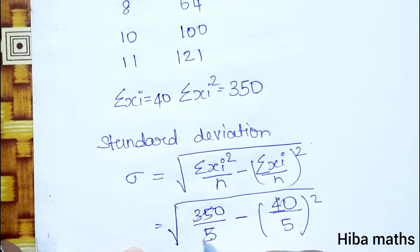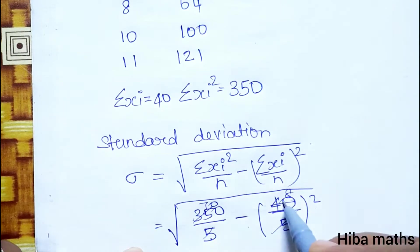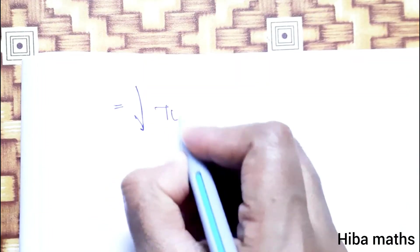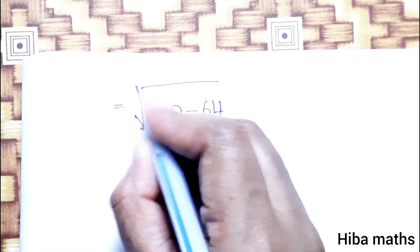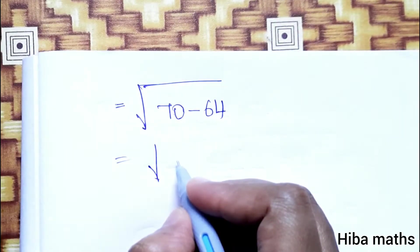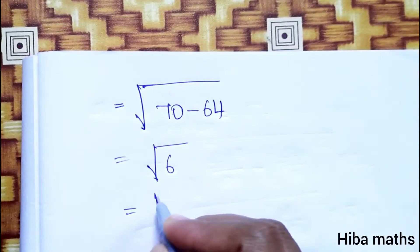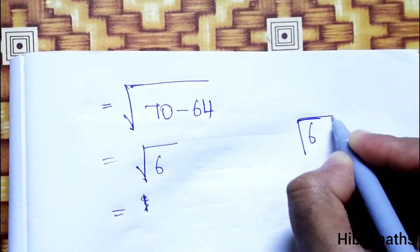We can solve it easily: 350 divided by 5 is 70, and 40 divided by 5 is 8. So it becomes root of 70 minus 8 squared, which is root of 70 minus 64, giving us root 6.